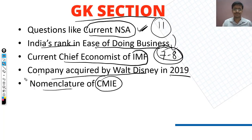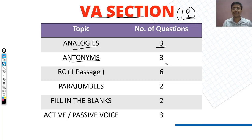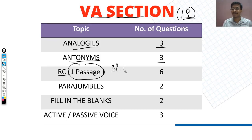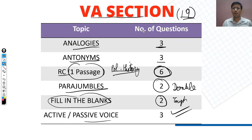Now the last section — VA. In VA there were 19 questions. Analogies: 3 questions. Antonyms included words like 'nadir', 'acrimonious', and 'pandemonium'. RC was related to political history and women — 6 questions, 2 of which were doable. Fill in the blanks with vocabulary was tough. Active and passive voice also appeared.